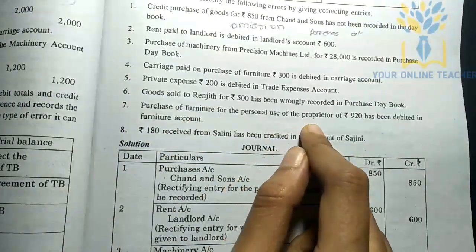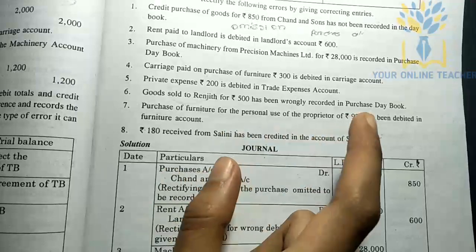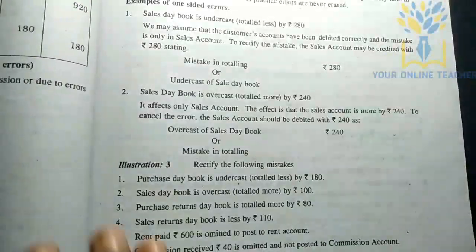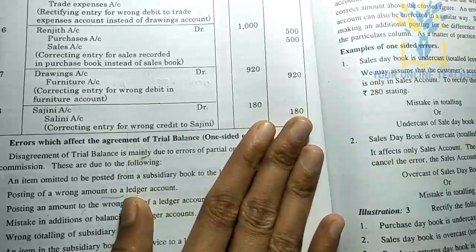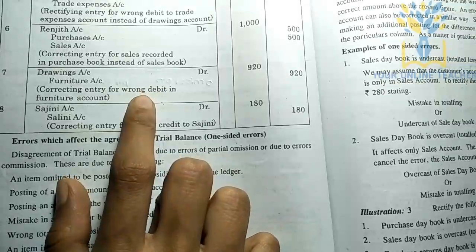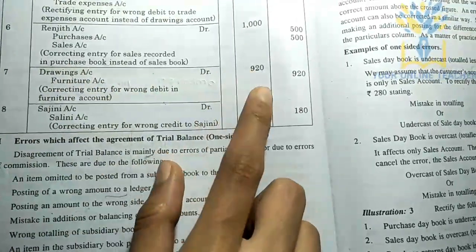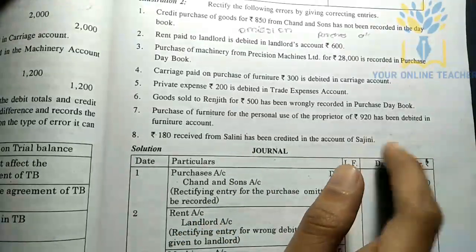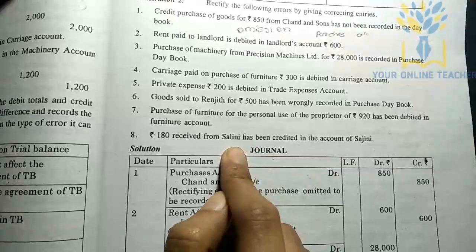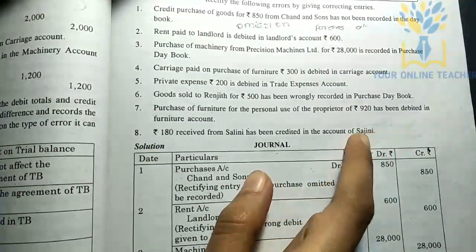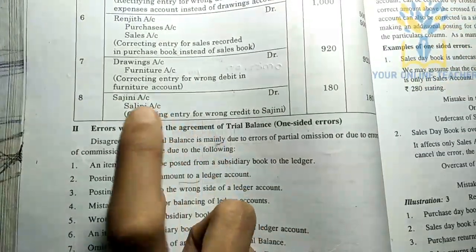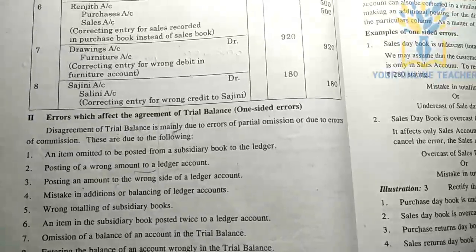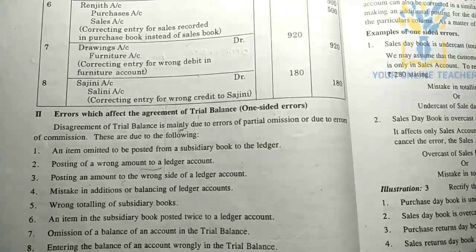This is a purchase of furniture for personal use of the proprietor for $920 — it should be debited to the drawings account and credited to the furniture account as rectification. Thank you.